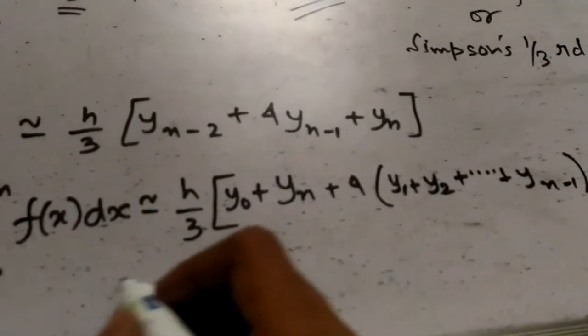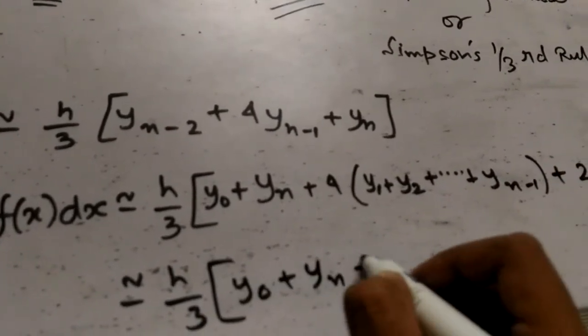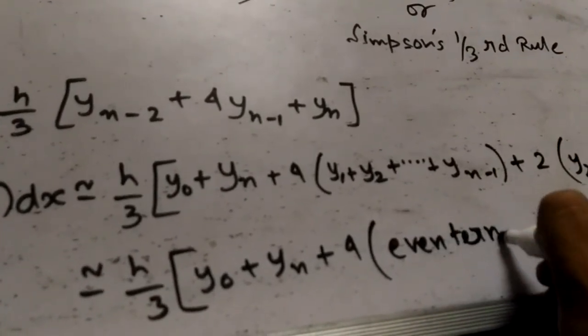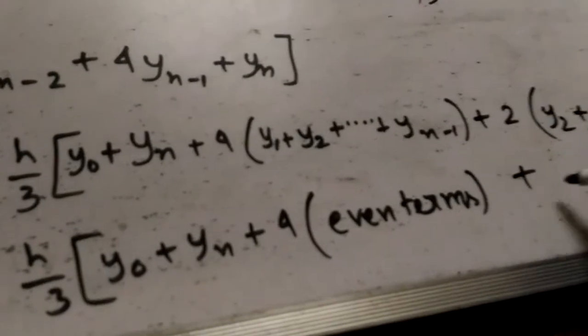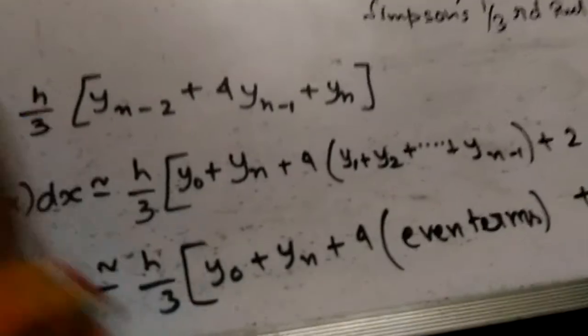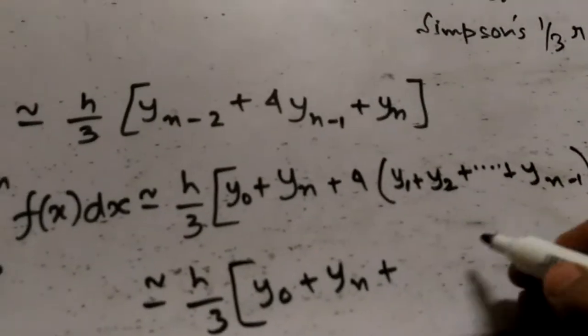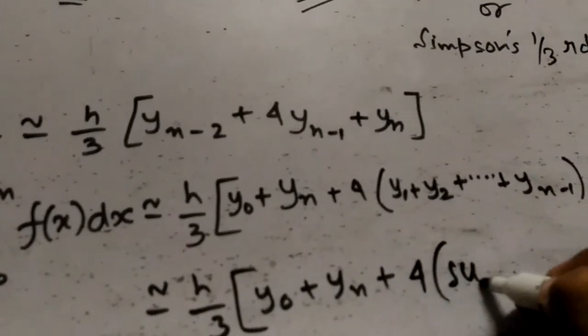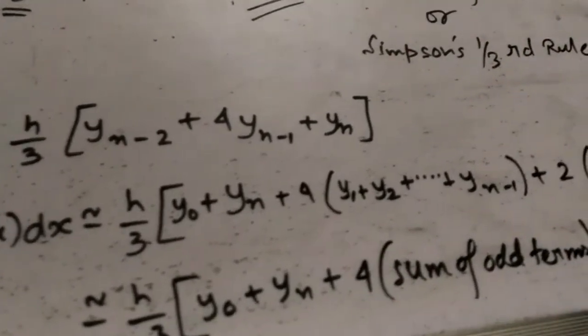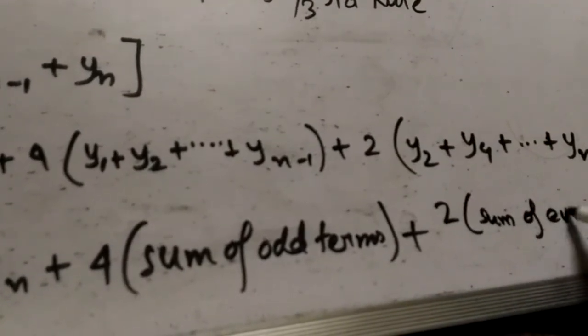In other words, we can say it is approximately equal to h/3 times y0 plus yn plus 4 into - sorry, it will be 4 into sum of odd terms plus 2 into sum of even terms.